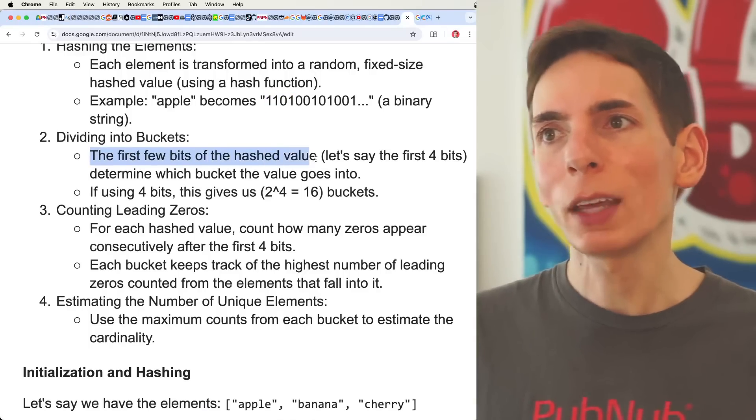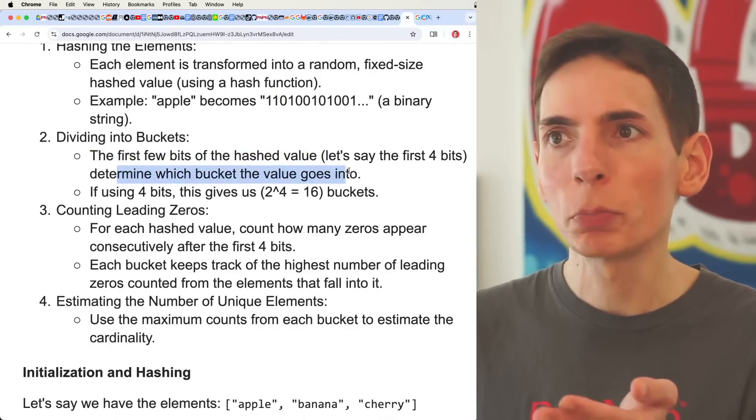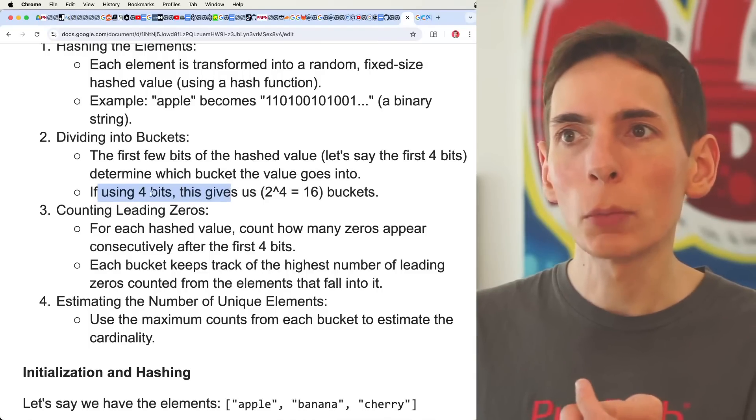Then the first few bits of the hash value, let's say the four bits, determine which bucket the value goes into. If we're using four bits, that means we get 2 to the 4, which equals 16 buckets.